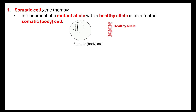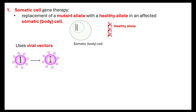What we want to do is take a healthy allele and replace the mutant allele with it. To get it into the cell, we use things like a viral vector. Viruses hijack the biochemistry inside cells by inserting their genetic material into host cells, so we can manipulate the viral DNA to carry the healthy allele. We can also use what's known as a liposome — basically a membrane which carries the healthy allele inside it.